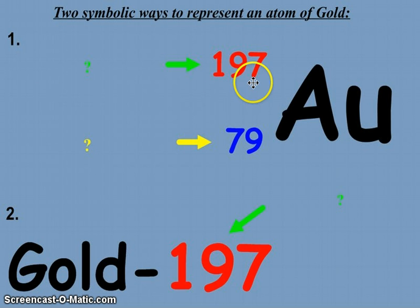The superscript at the top, the 197, that is our mass number. At the bottom, the subscript, that is the atomic number. And you can see that on the periodic table. When you look at the symbol AU, you see the number 79.